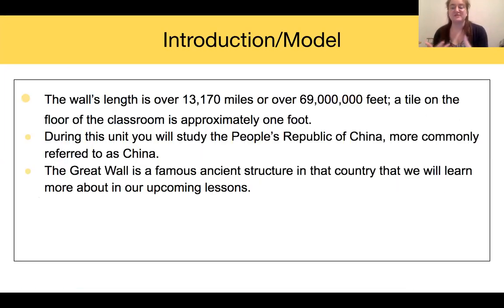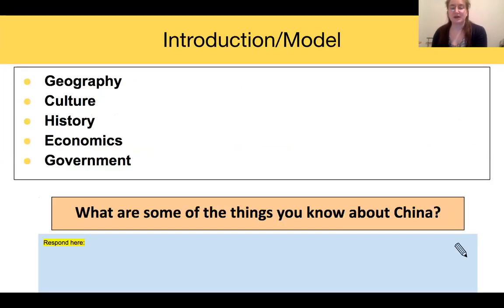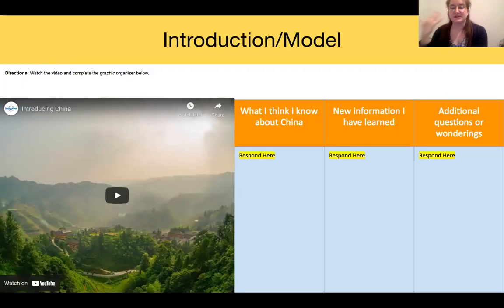Next, you give them some new information. Still in the introduction and modeling phase, you're telling children a little bit more about the Great Wall of China and asking them to begin to think about what they know. Now we see a modified RAN: what I think I know, new information I've learned, and additional questions or wonderings.